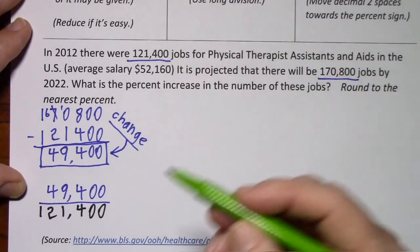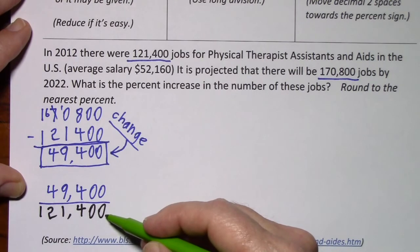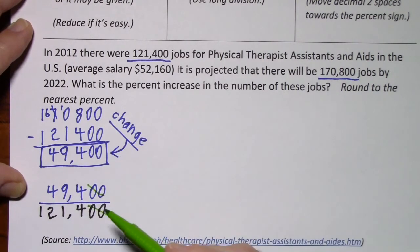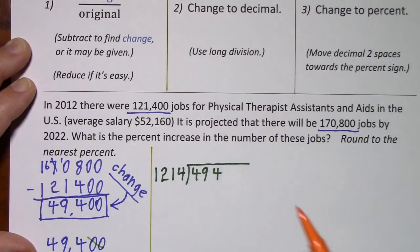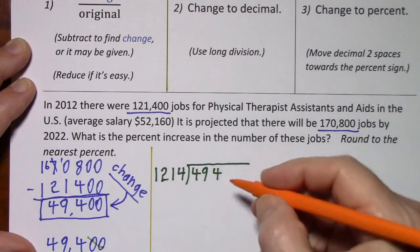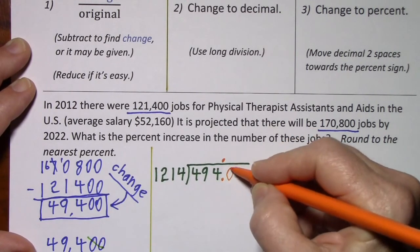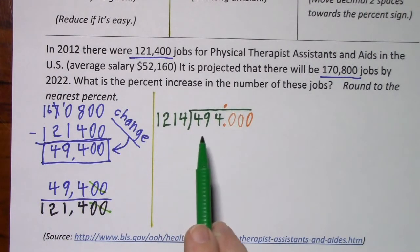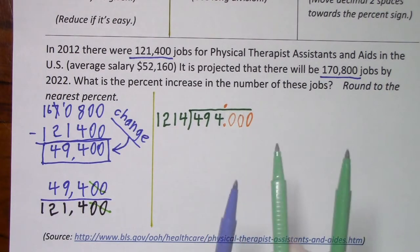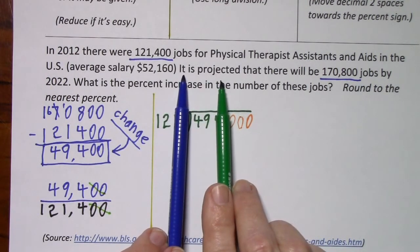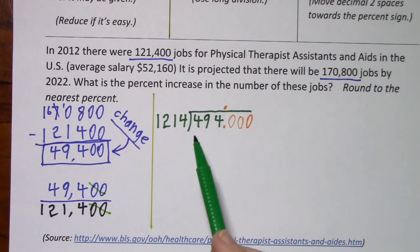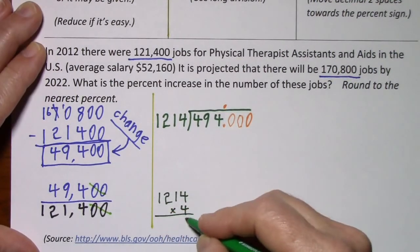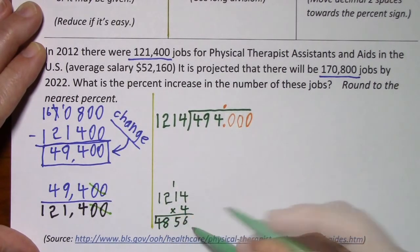You do want to reduce if it's easy, and here you can divide by 100. For the next step, we'll change this fraction to a decimal with long division. This does not fit into that, so 1,214 into 4,940 — 12 goes into 49 four times, that would be 48. We'll try 4 times 1,214 and see if it fits, and it does.